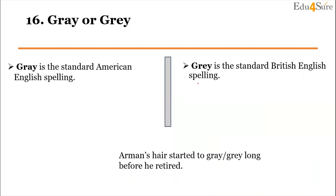Next, 'gray' and 'grey'. Both pronunciations are the same; the difference is only A versus E. Gray with an A is the color in American English, and grey with an E is the color in British English. The meaning does not change — only the spelling changes depending on which part of the world you are in.